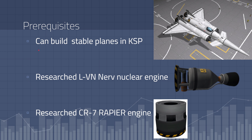Prerequisites. First you have to know how to build stable planes in KSP. Then if you're playing career mode, you have to have researched the LVN nerve nuclear engine and researched the CR7 rapier engine. This is the hybrid engine that can switch between open cycle and closed cycle.